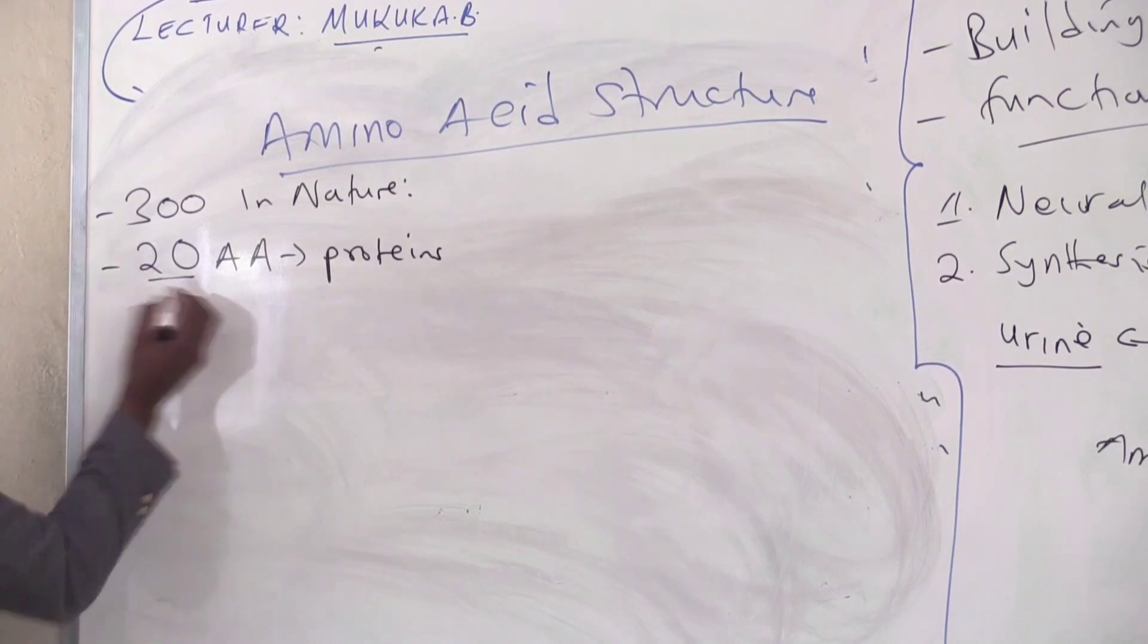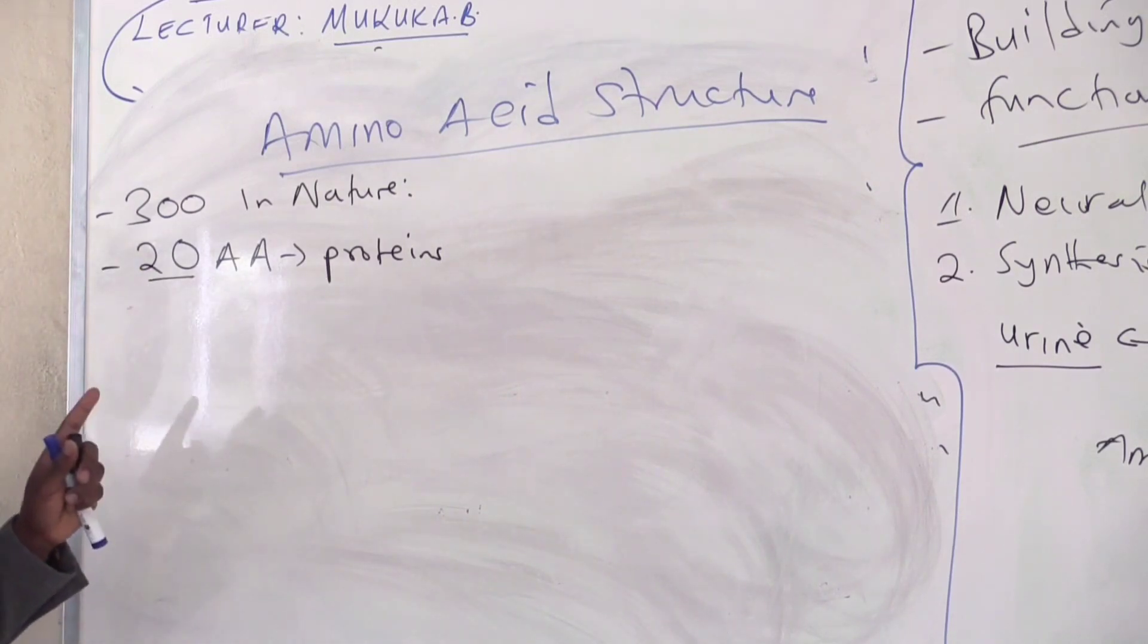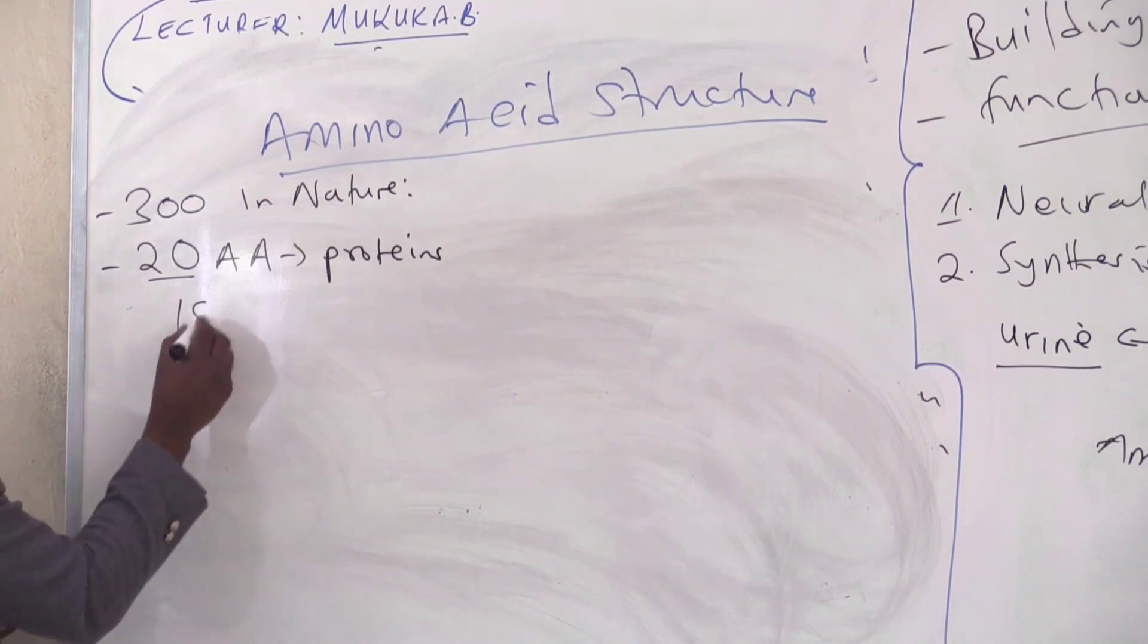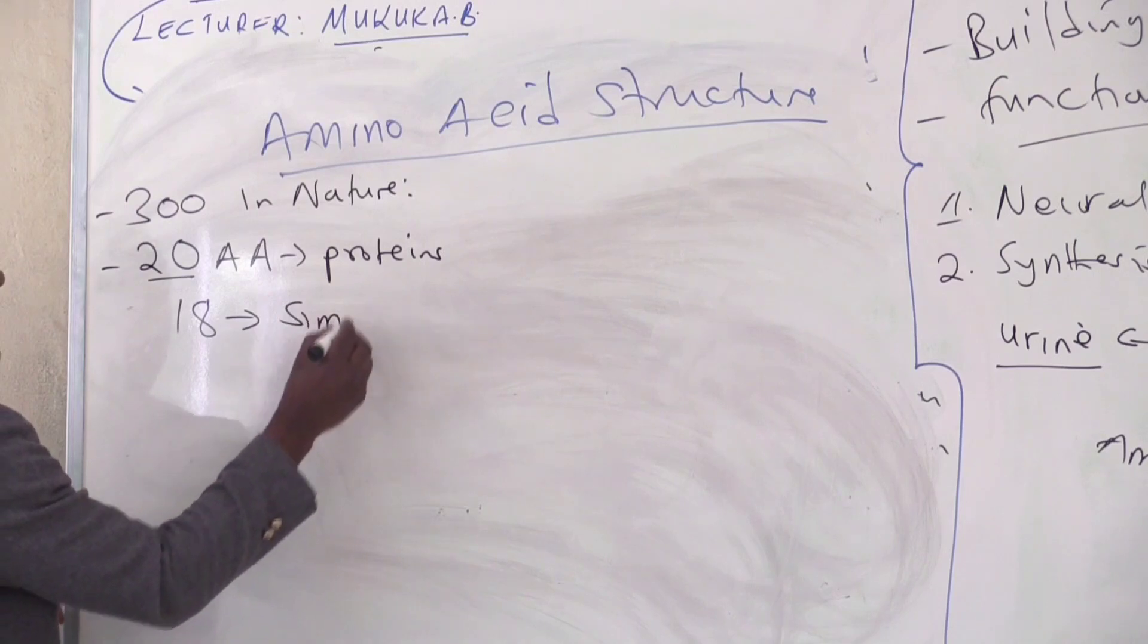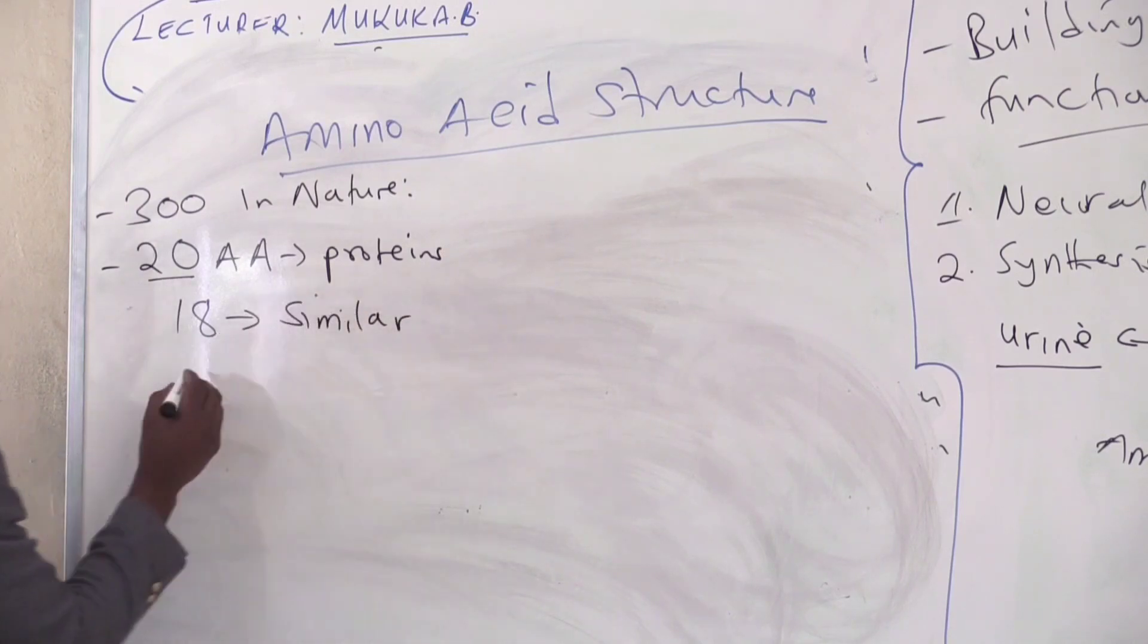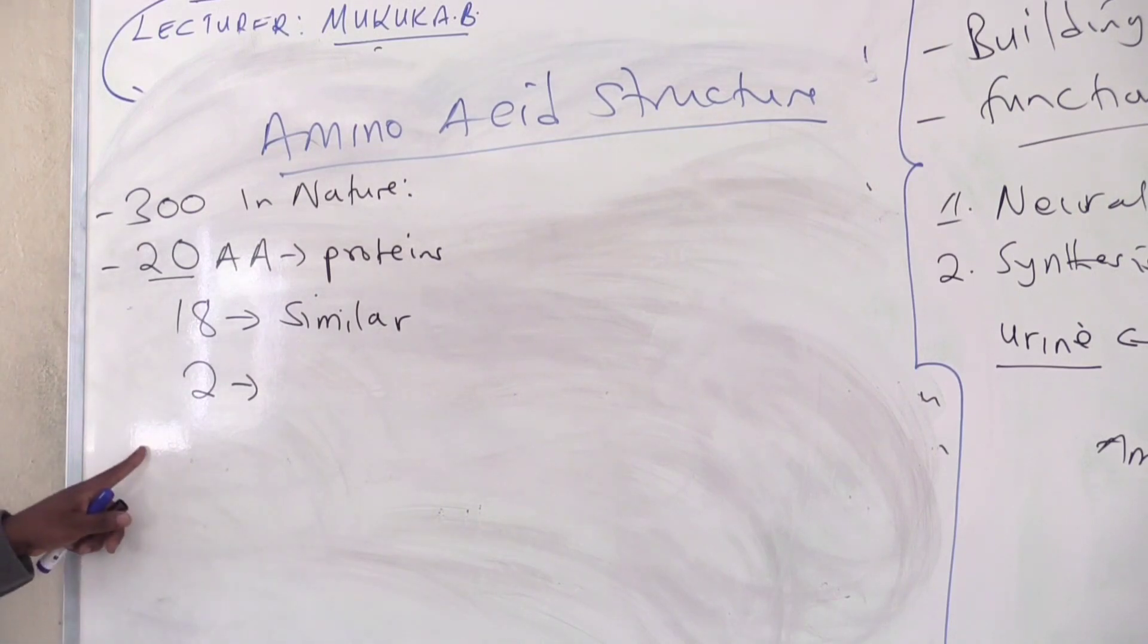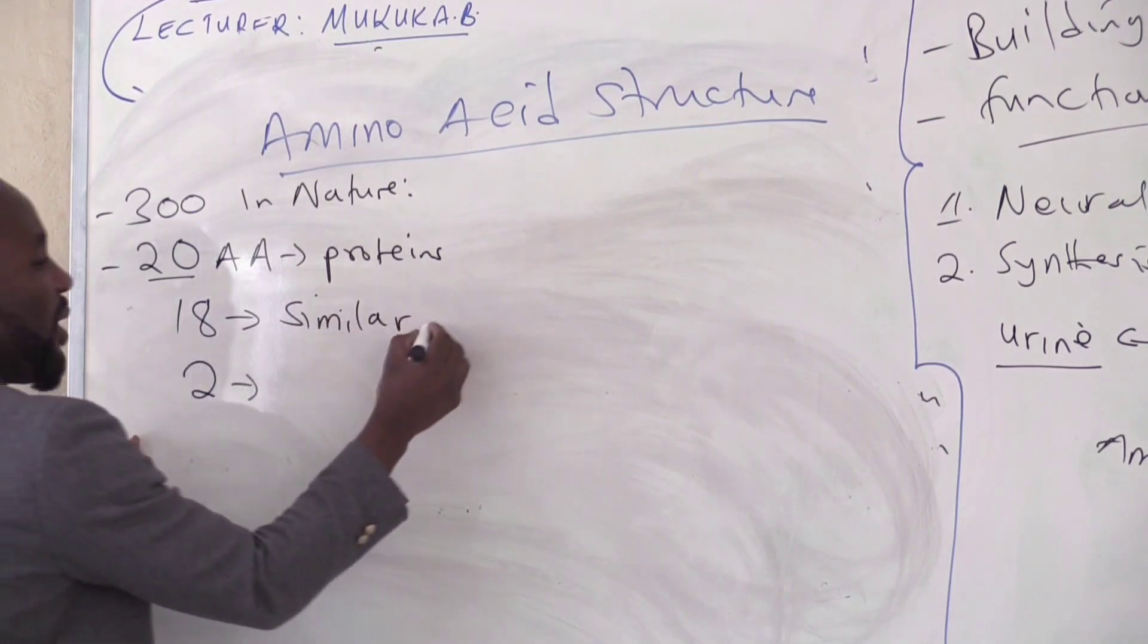So the 20 amino acids, although they seem to be a lot, 18 of them, their structure is similar, except for two. 18 of the amino acids.